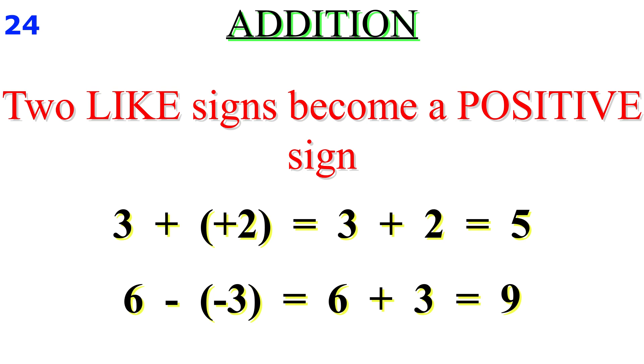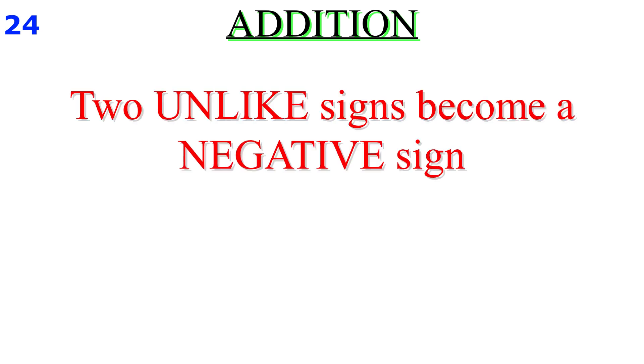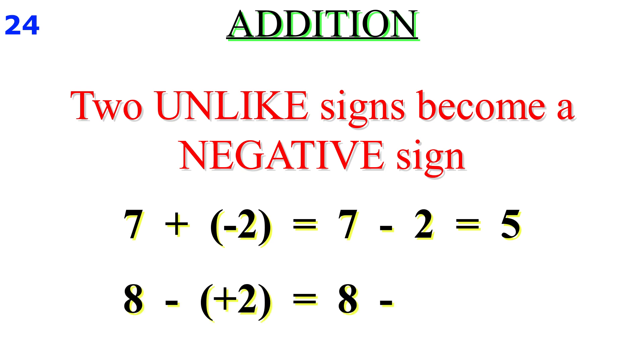Number two: two unlike signs become a negative sign. For example, 7 plus minus 2 equals 7 minus 2 equals 5. 8 minus plus 2 equals 8 minus 2 equals 6.